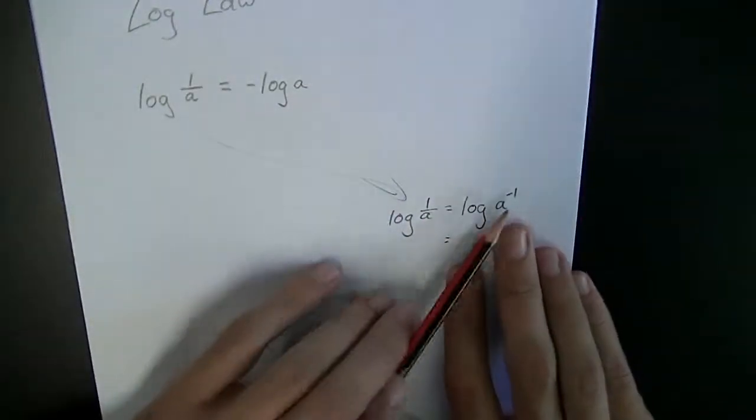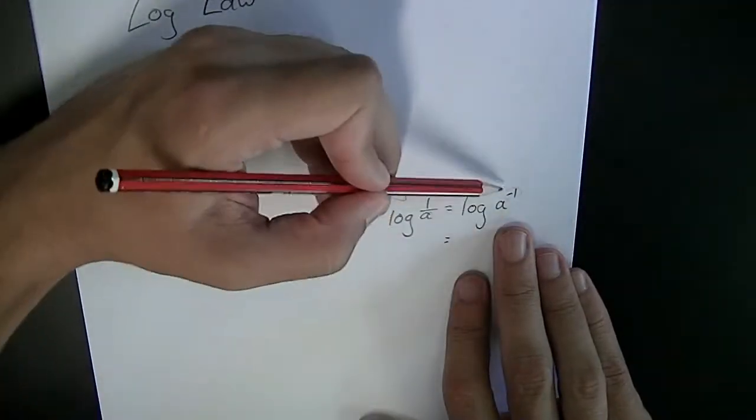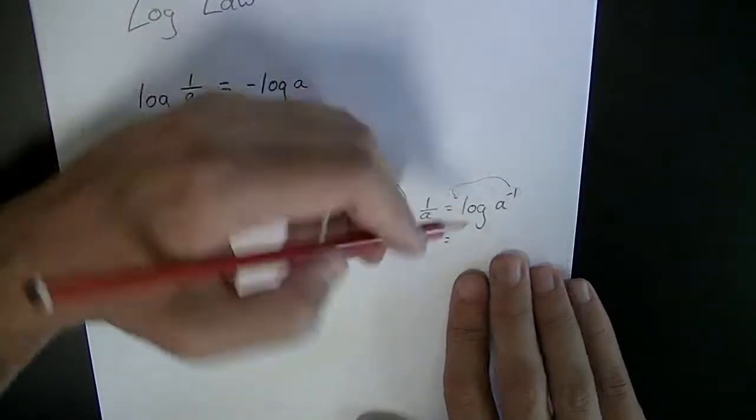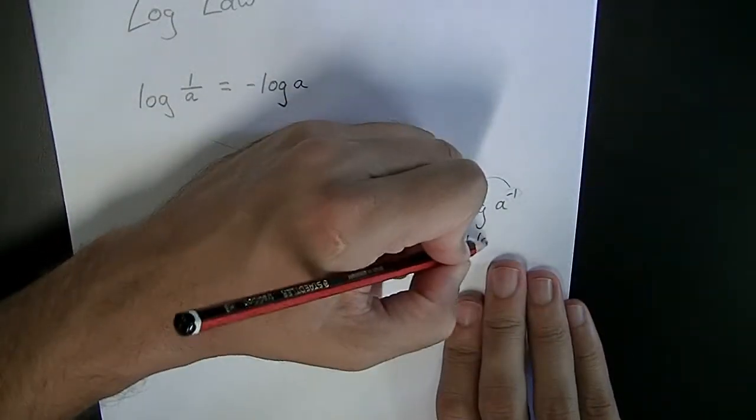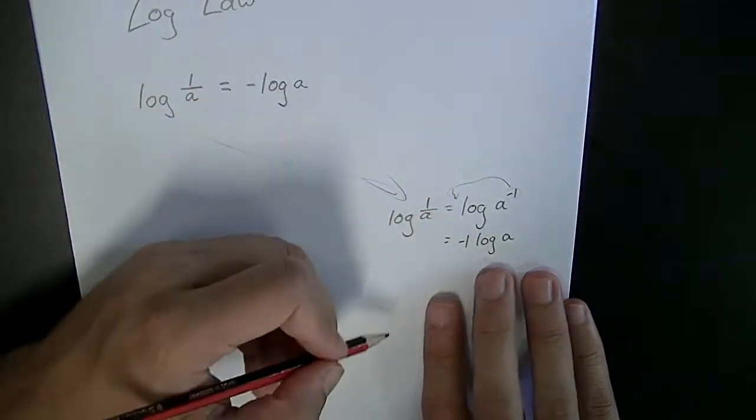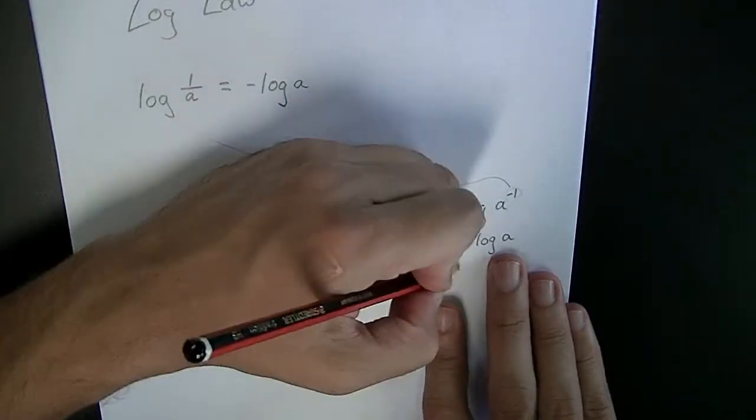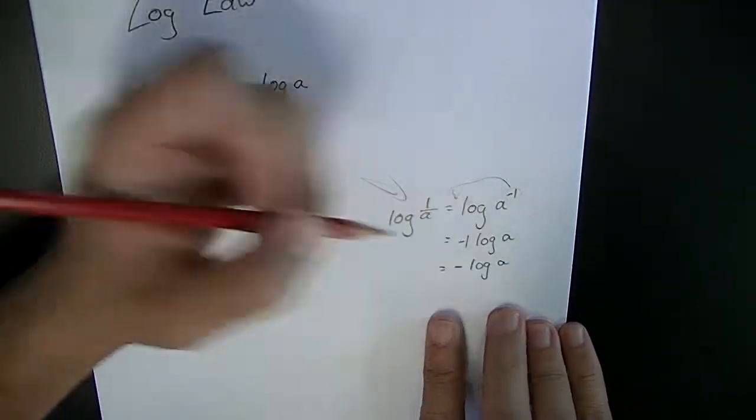And using our third log law, you can take that negative 1 and move it out the front. So we end up with negative 1 times log a. And negative 1 times log a, you can just rewrite as negative log a.